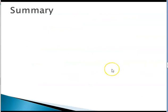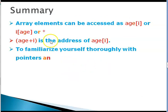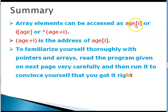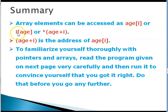In summary we will say that array elements can be accessed as age[i] or i[age] or star age plus i. Age plus i is the address of age[i]. If you put a star in front of it, it will get the value.